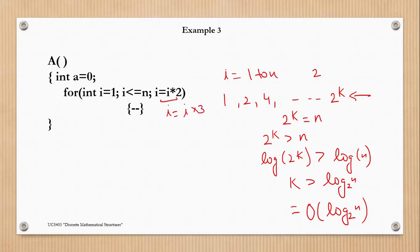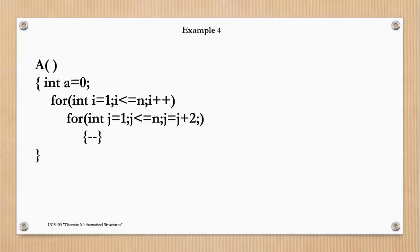Now if instead of multiplying i by 2 we have the statement i equals i times 3, then this loop will run for i equal to 1, 3, 9, and 3 raised to power k, and the answer would be O(log n base 3). Next, we have an outer for loop running for n times, so the total number of iterations is n and its complexity is O(n).